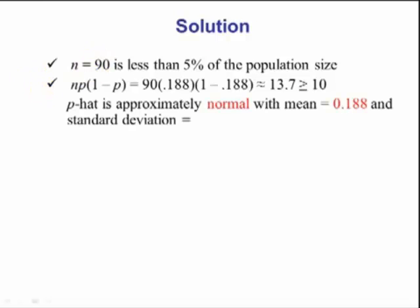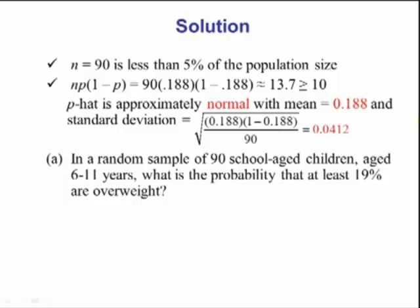That means the distribution of p hats is approximately normal with a mean of 0.188 and a standard deviation equal to 0.0412. To answer the question, we first find our z-score. We take our p hat 0.19, subtract our mean 0.188, and divide it by our standard deviation 0.0412. So our z-score is approximately 0.05.